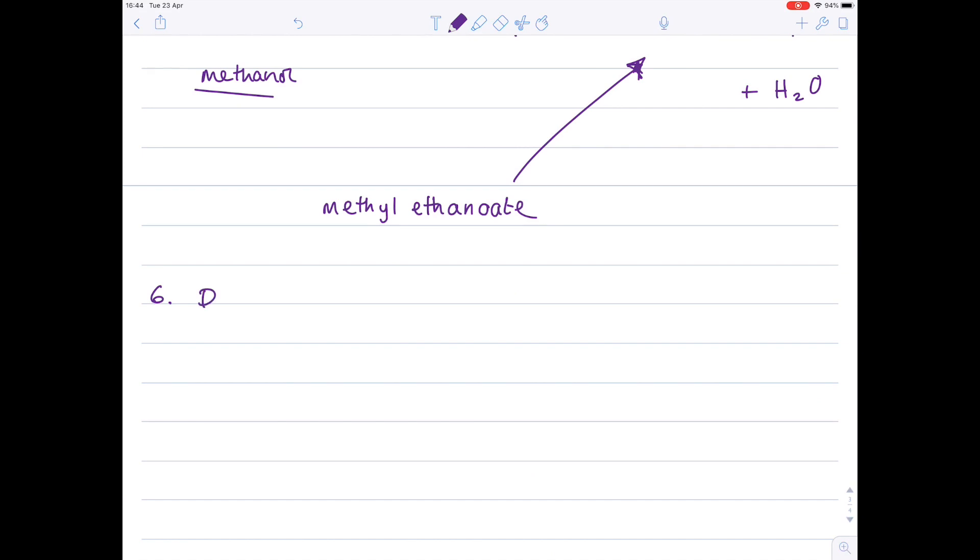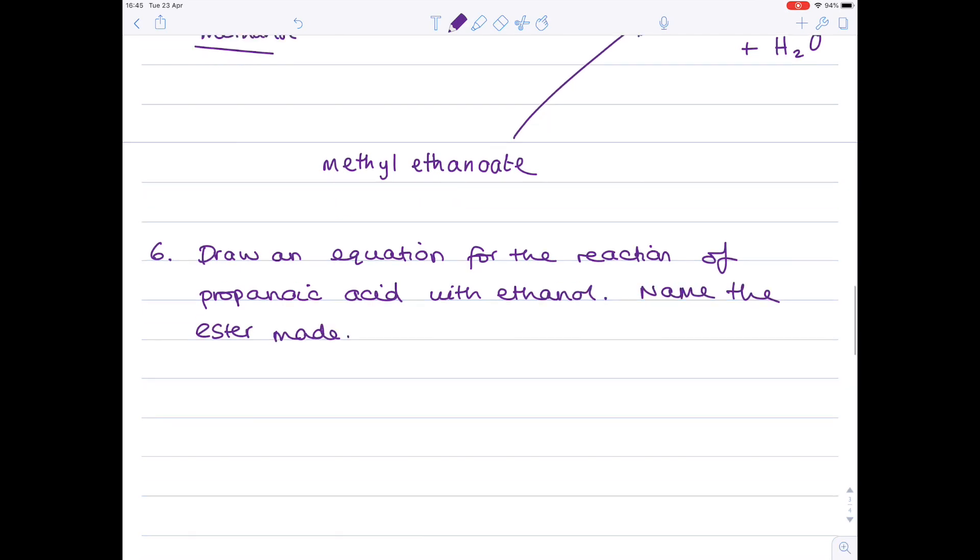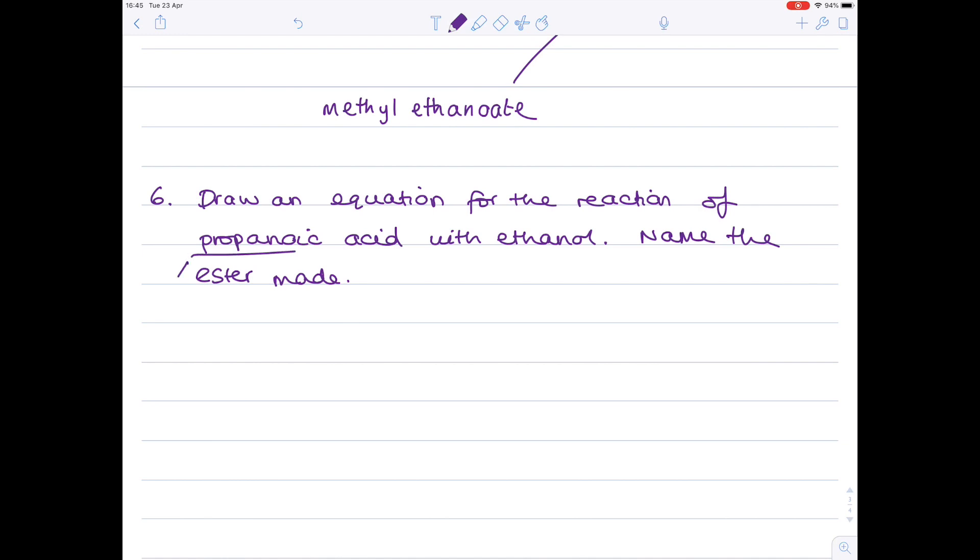In question six, draw an equation, because we're going to practice this further, for the reaction of propanoic acid with ethanol. So similar thing. And we want to name the ester produced. So starting with propanoic acid. So I know that prop means it contains three carbons. Anoic acid means that it's the carboxylic acid with this functional group.